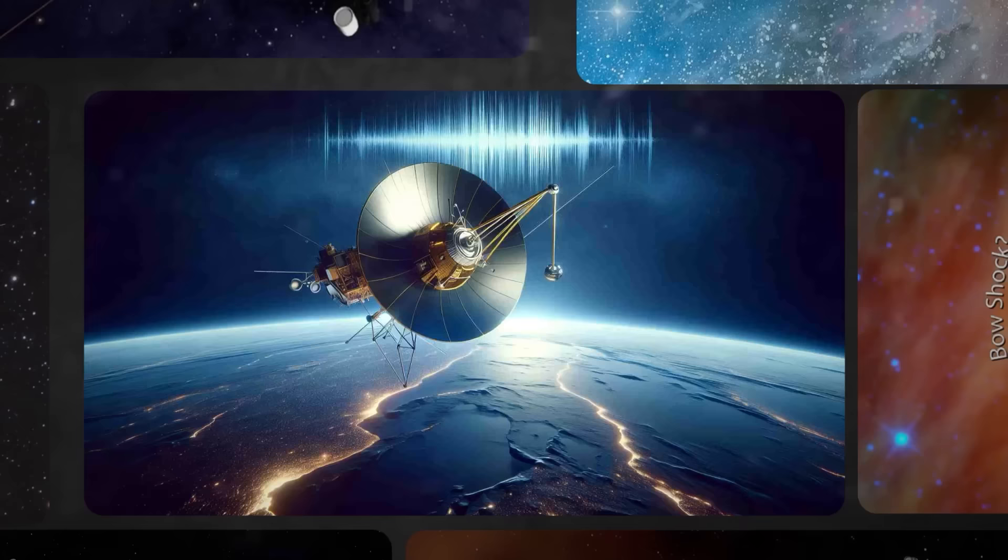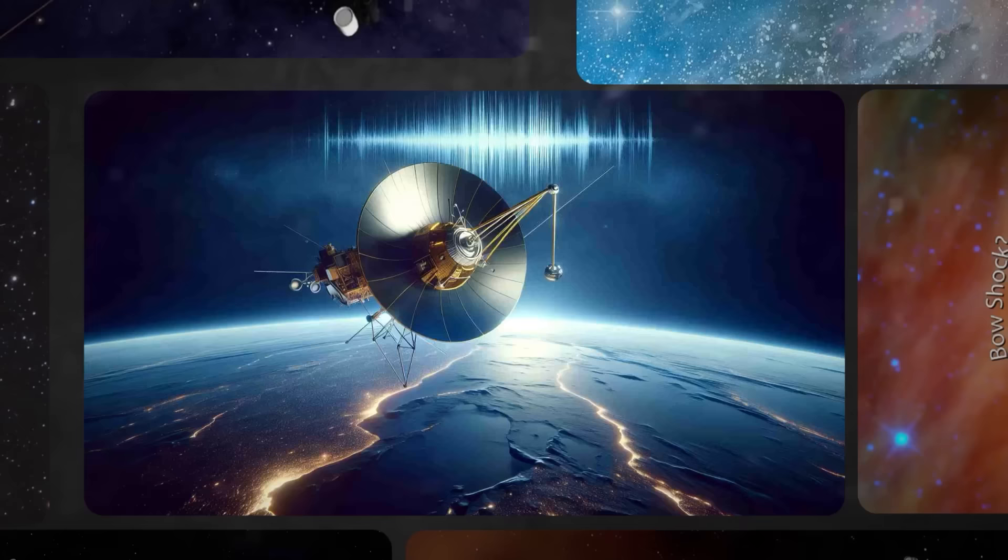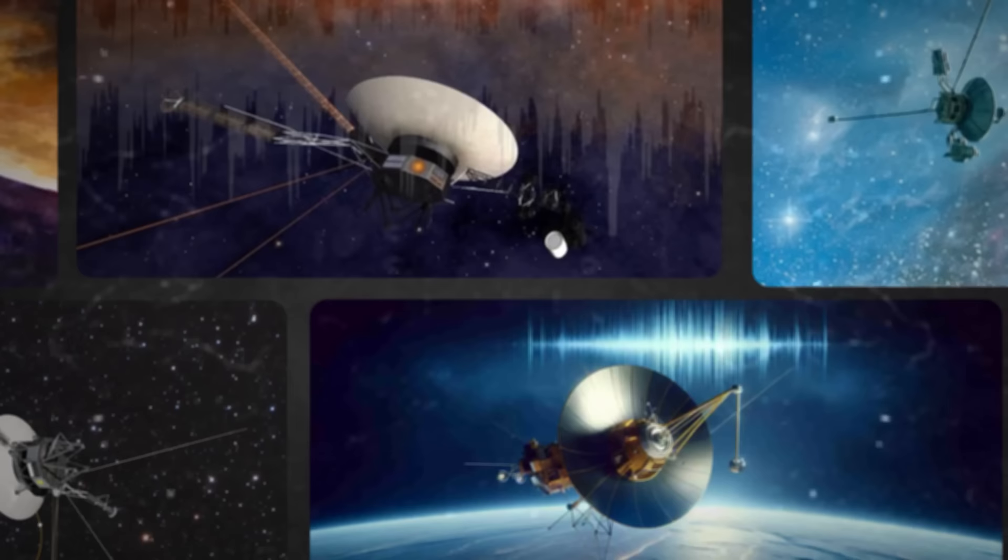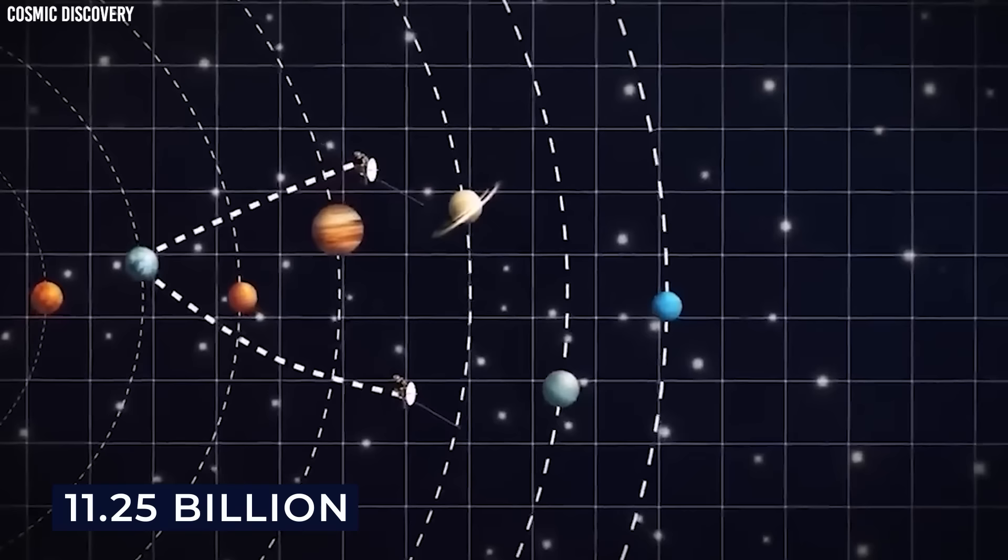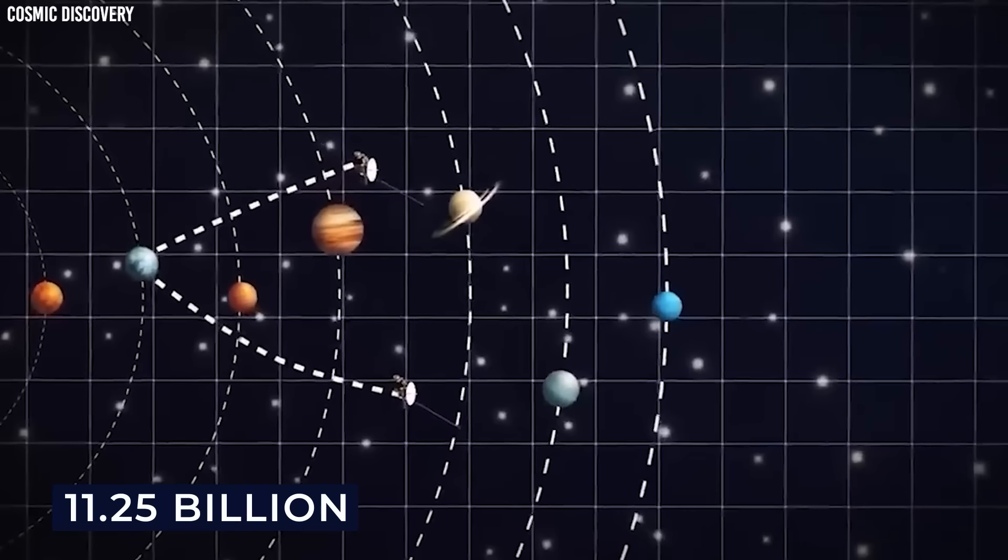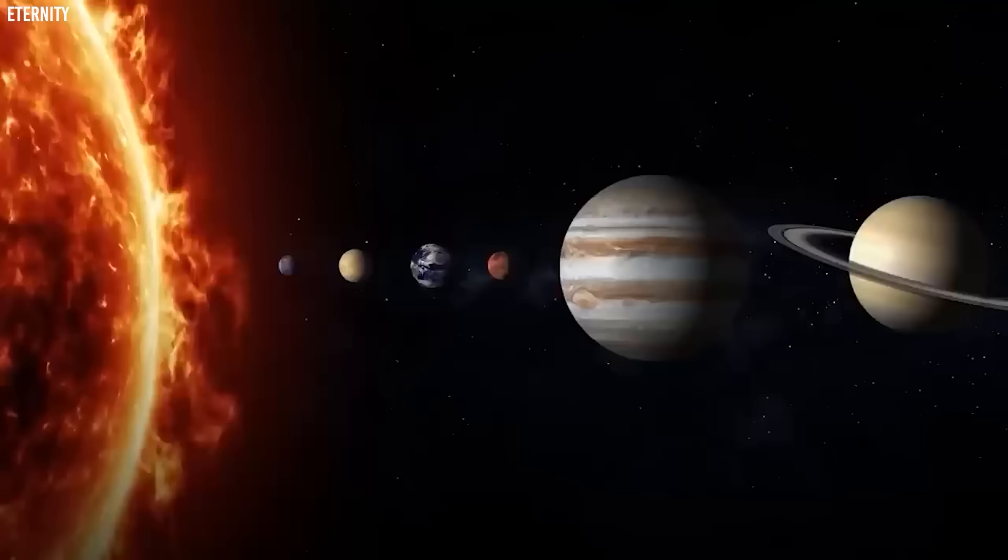On this pivotal date, Voyager 1 detected a remarkable 1,000-fold decrease in these solar particles, and a 9% increase in galactic cosmic rays originating from outside the solar system. Voyager 1 found itself at a staggering distance of 11.25 billion miles, or 18.11 billion kilometers, from the Sun. This is equivalent to approximately 121 astronomical units at that moment.